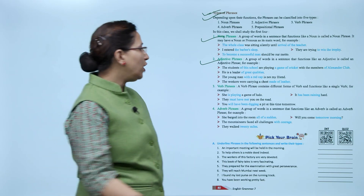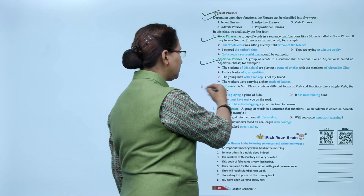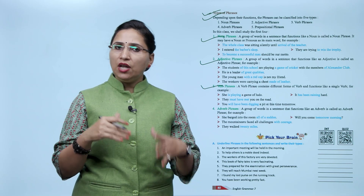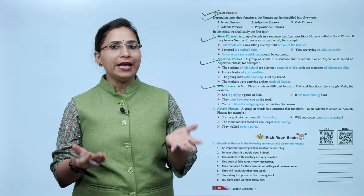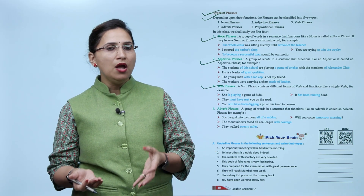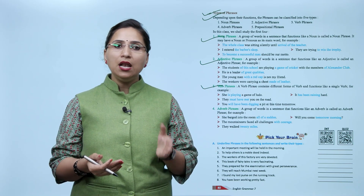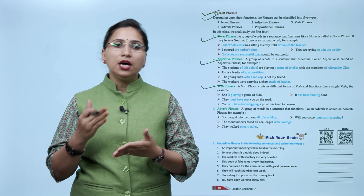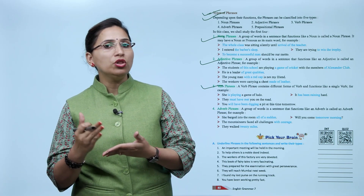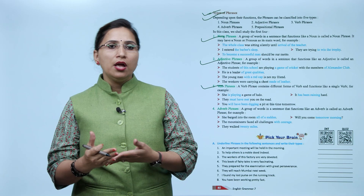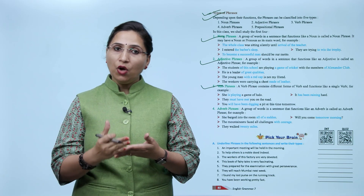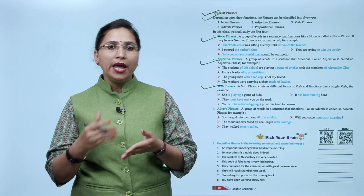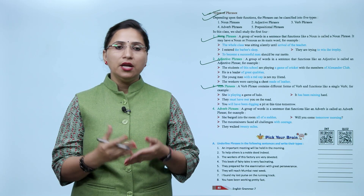Next is verb phrases. A verb phrase contains different forms of verb and functions like a single verb. For example: 'She is playing a game of Ludo.' 'They must have met you on the road.' 'You will have been digging a pit at this time tomorrow.' 'It has been raining hard.'